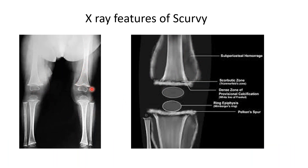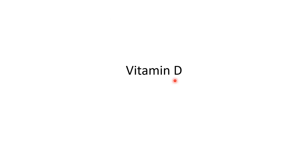X-ray findings in scurvy include pencil-thin cortex outline, Wimberger's sign (ring-shaped epiphysis with darker outline), white line of Trümmerfeld, Pelkan spurs at bone ends, and Trümmerfeld zone (radiolucent area proximal to the white line). Subperiosteal hemorrhage can produce a dumbbell-shaped area on X-ray.